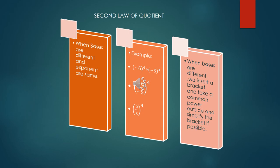So we insert the bracket, whole bracket on 6 upon 5. There as you can see minus and minus will be cancelled out. And we can simplify the fraction if it is possible. And we get the answer 6 upon 5 to the power 4. Power remains same but the bases are simplified according to the fraction.